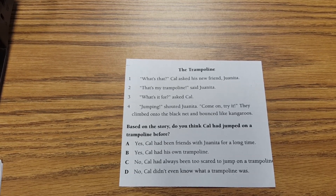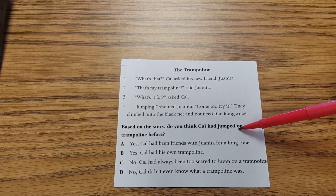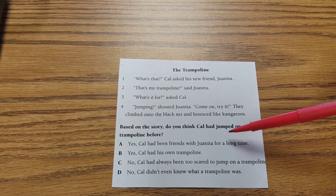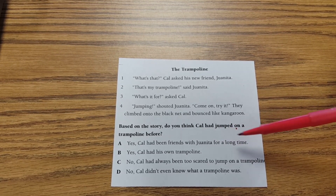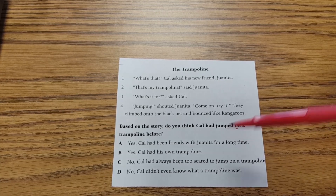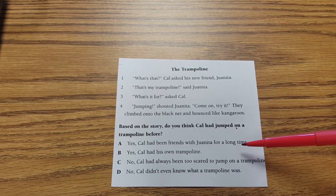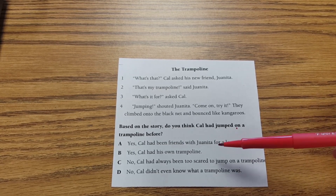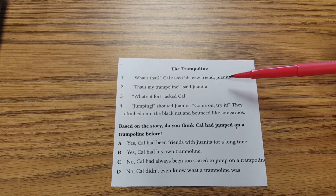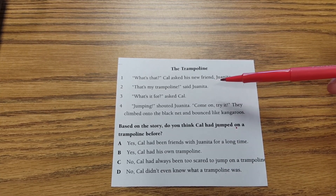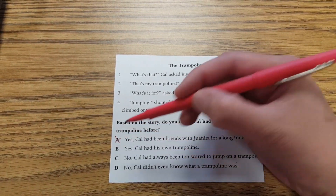The first thing we need to ask ourselves is: does Answer A even answer the question that was asked? We need to find out if Cal ever jumped on a trampoline before. This does not even answer that question. Also, this answer says Cal had been friends with Juanita for a long time, but on the first line of the text it shows that Cal asked his 'new friend' Juanita. So we can go ahead and cross out A as an option.